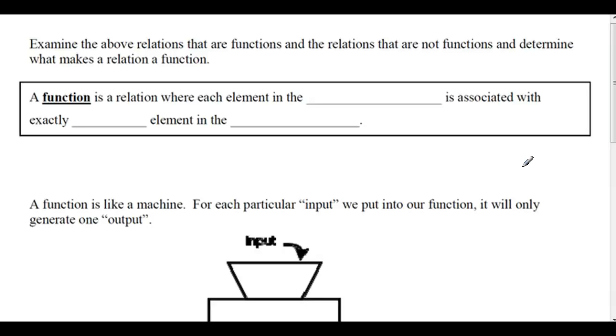Examine the above relations that are functions and determine what makes a relation a function. So a function is a relation where each element in the domain is associated with exactly one element in the range.